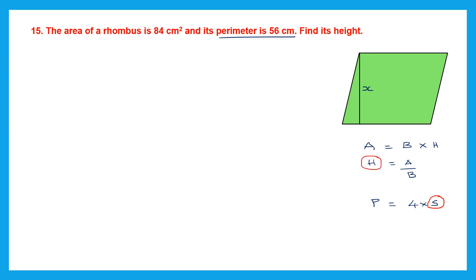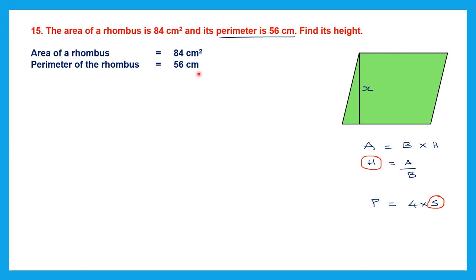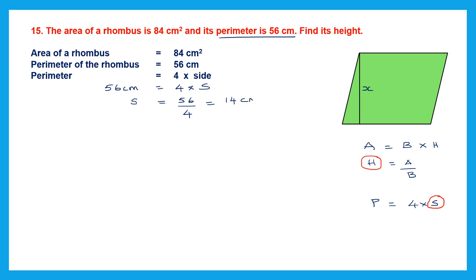First, we'll use the perimeter formula to find the side. Perimeter is 4 into side: 56 centimeters equals 4 into side. So side equals 56 divided by 4, which is 14. Now that we know the side is 14 centimeters, and since all sides of a rhombus are equal, the base is 14 centimeters on all sides.